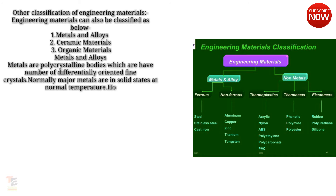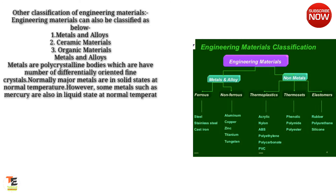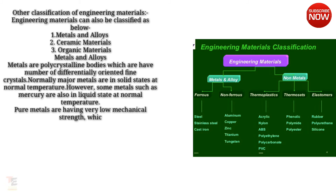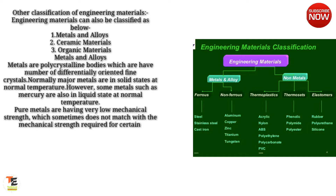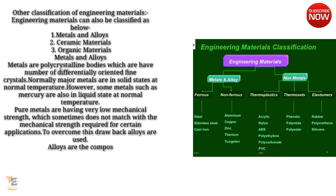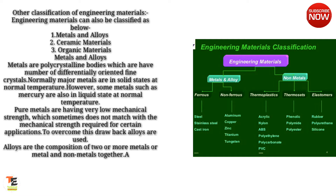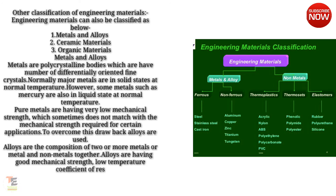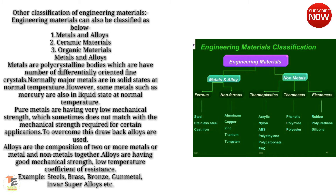Normally major metals are in solid states at normal temperature; however, some metals such as mercury are also in liquid state at normal temperature. Pure metals have very low mechanical strength, which sometimes does not match the mechanical strength required for certain applications. To overcome this drawback, alloys are used. Alloys are the composition of two or more metals, or metal and non-metals together. Alloys have good mechanical strength and low temperature coefficient of resistance.